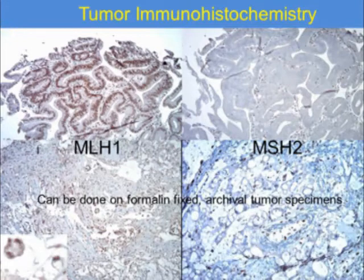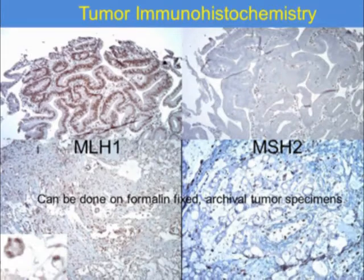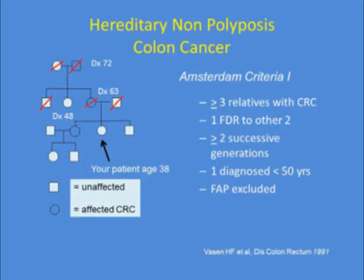This can be done in formalin-fixed tissue. If you have an unaffected patient in the office whose relative had cancer, genetic counselors can potentially retrieve that archived tissue and have it stained for mismatch repair proteins. So the clues to hereditary colorectal cancer include HNPCC.